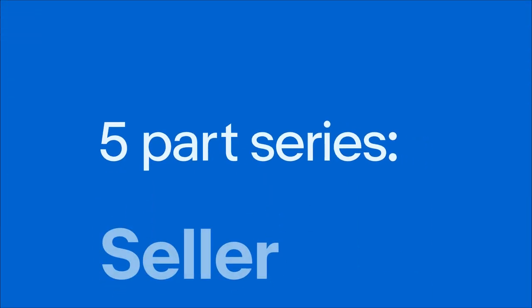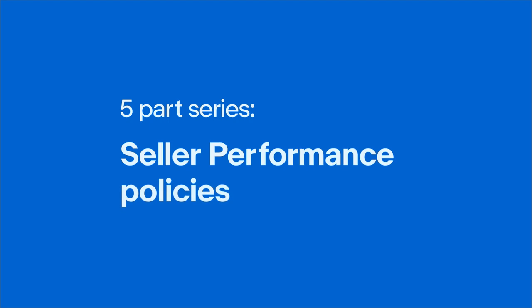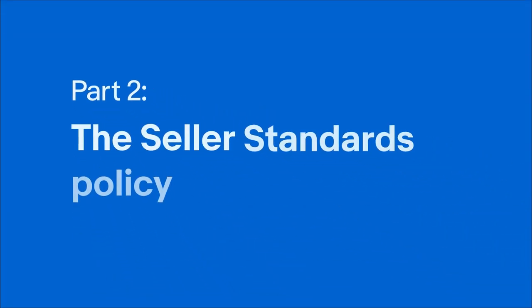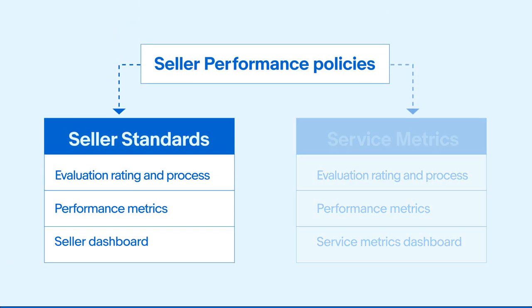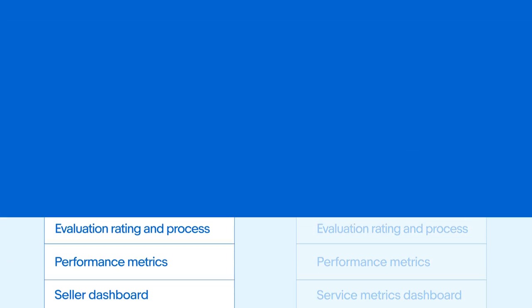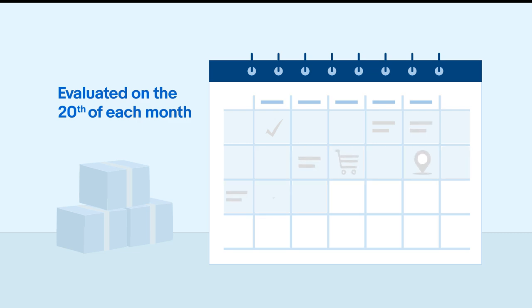Welcome back to our video series on seller performance policies, designed to help you understand how we evaluate you and prepare you for success selling on eBay. In this video we'll introduce you to seller standards. As covered in part one of the series, we evaluate your performance on the 20th day of each month and then assign you a seller level within the following three categories.